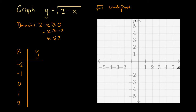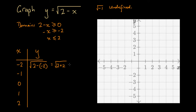For x = -2, we substitute into the function: y = √(2 minus negative 2). A minus and a minus makes a plus, so this becomes √(2 + 2) = √4. Since 2 times 2 equals 4, the square root of 4 is 2. So the point associated with x = -2 is (-2, 2).